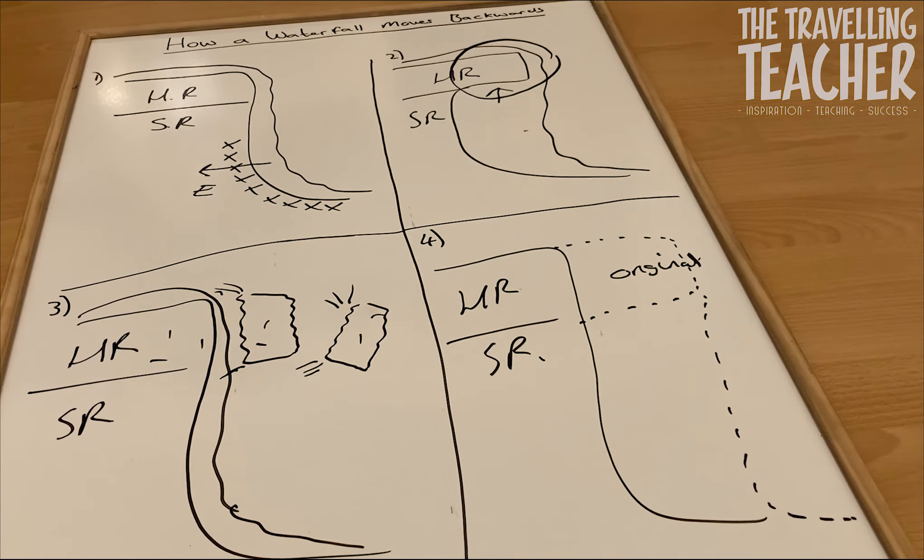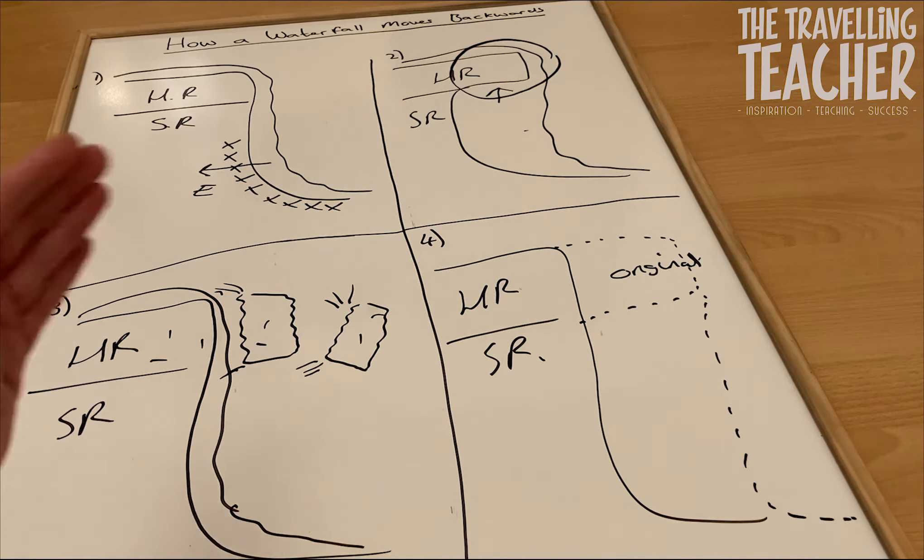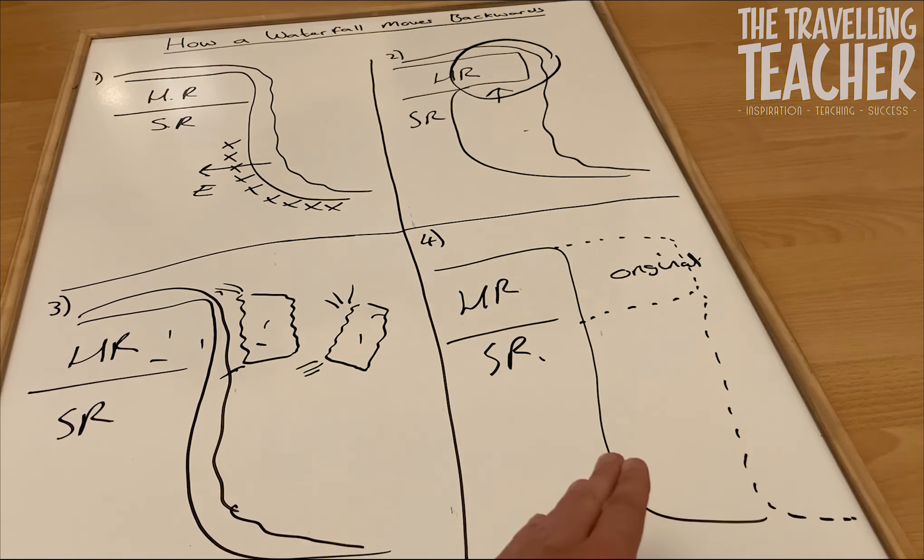And that's it. So it's as simple as that. So you've got a waterfall, hard rock, soft rock. The soft rock is eroded backwards due to abrasion and hydraulic action. That leaves a hard rock in diagram two overhanging. So eventually right here, diagram three, hard rock collapses down. And then you can see that over time, the waterfall has moved back.